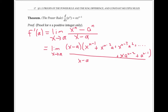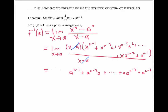Now that I've factored, I can cancel the (x minus a) and simply evaluate my limit by plugging in x equals a, to get a^(n−1) plus a^(n−2)·a, and so on. Each of these terms equals a^(n−1), and there are a total of n terms, since they came from the terms above starting with x^(n−1) and ending with x^0. So we get a final sum of n·a^(n−1) for the derivative f'(a), which is exactly what we wanted to show.